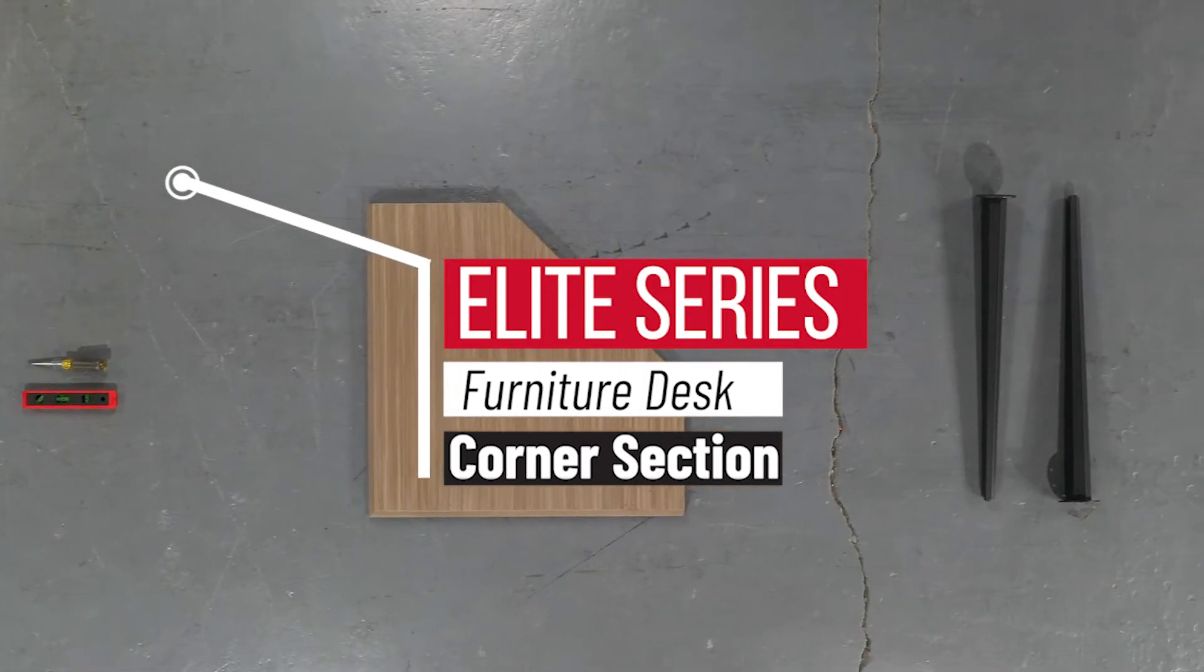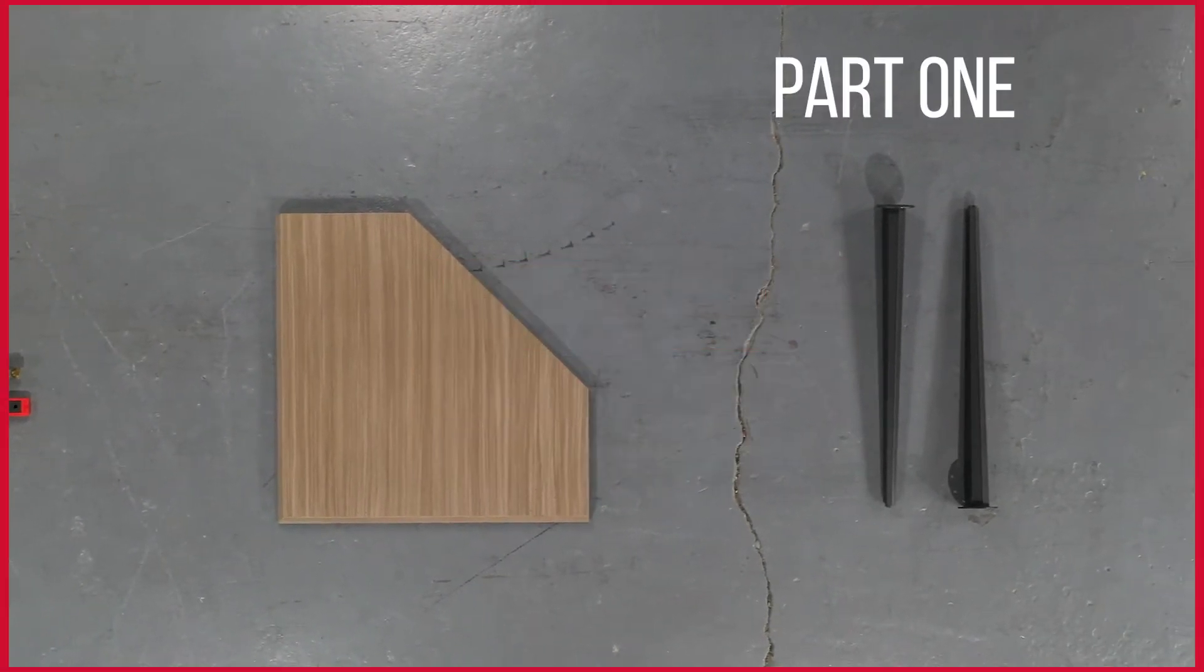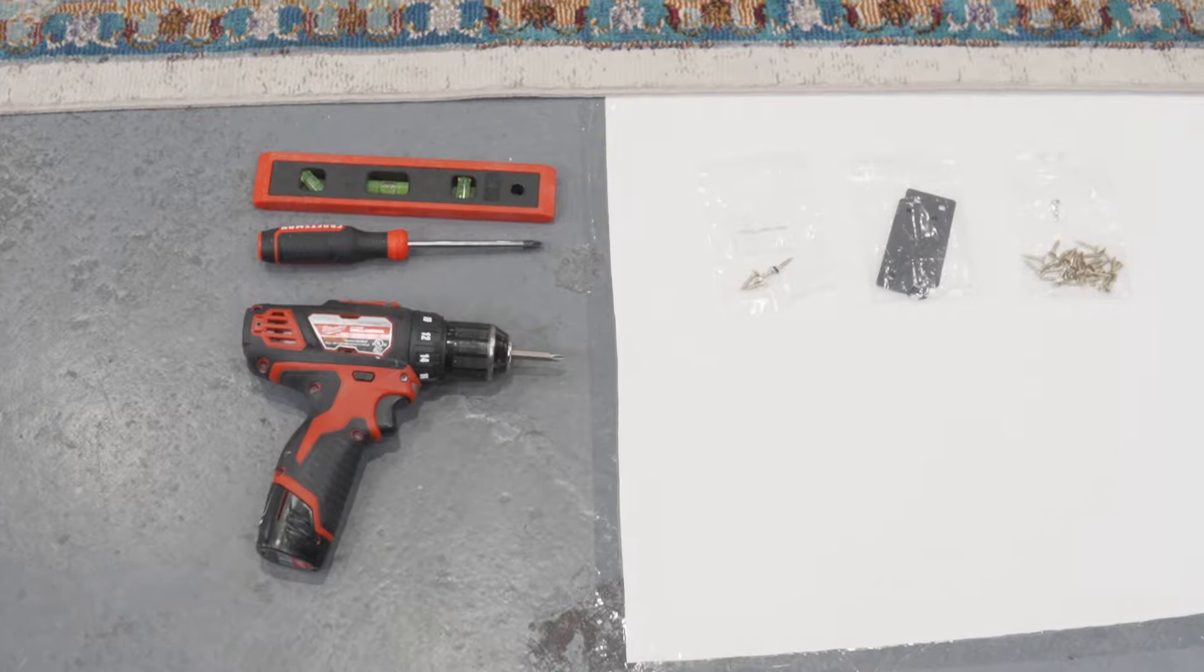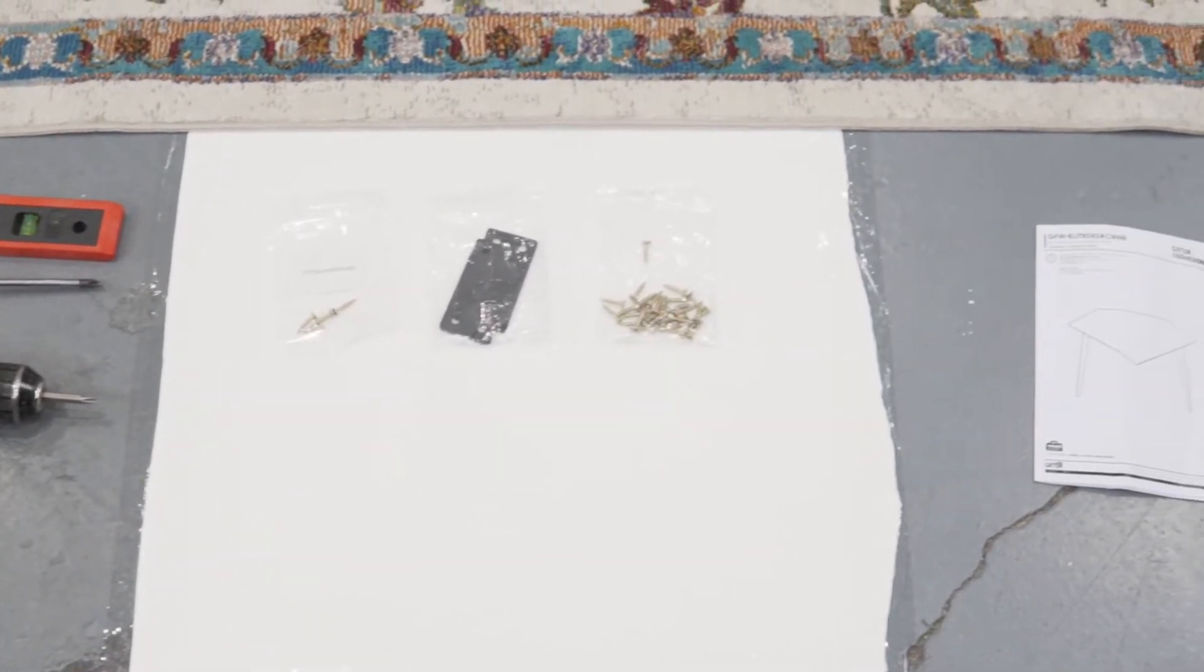Today we're going to be assembling the Elite Workstation Corner Desk. The tools required will be a Phillips screwdriver and a level. You may use an electric drill.